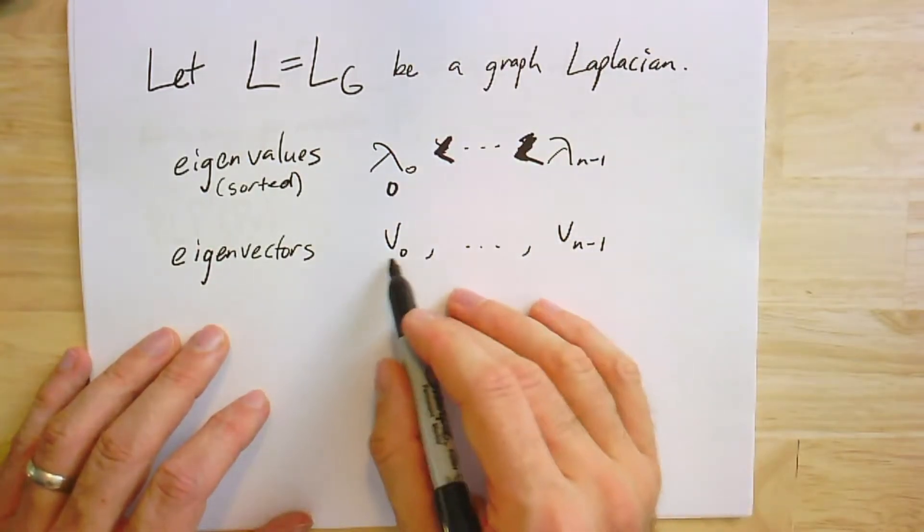Very nice, very handy. I'm going to sort them from smallest to biggest—this is going to be the smallest, this is going to be the biggest. I'll give you a hint: actually the first one is zero. And then I've got the eigenvectors corresponding to those eigenvalues, so that means L times vᵢ equals λᵢvᵢ.